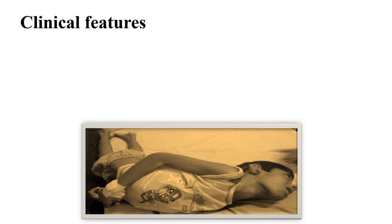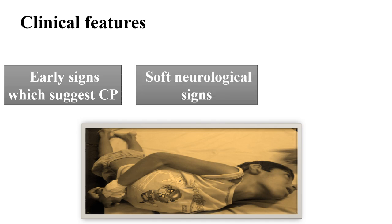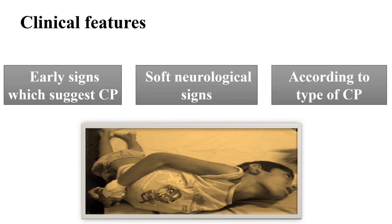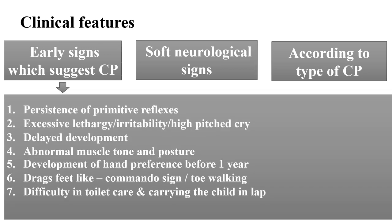Clinical features in cerebral palsy: early signs which suggest cerebral palsy include persistence of primitive reflexes, excessive lethargy, irritability, high-pitched cry, delayed developmental milestones, and abnormal muscle tone — either hypotonia or hypertonia.